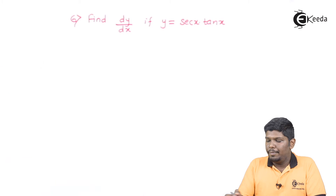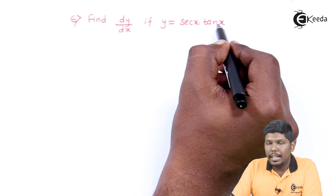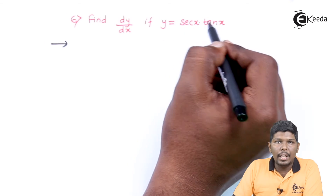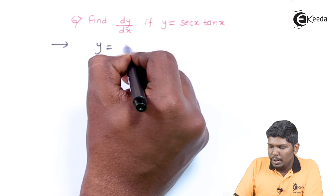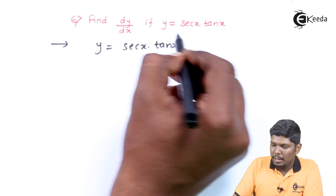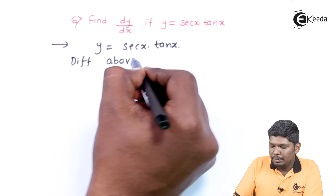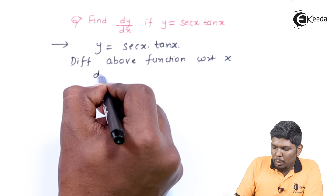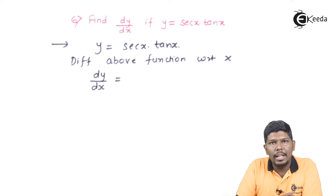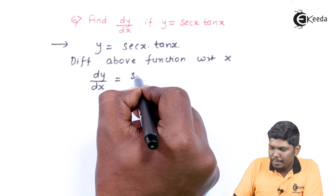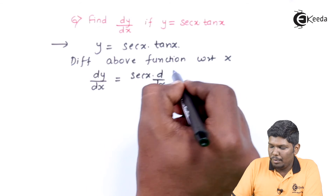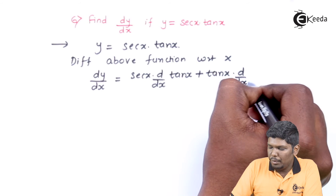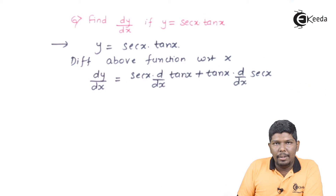In problem number 6, we have two functions getting multiplied, so whenever two functions are multiplied we can directly use the UV rule. y is equal to sec x into tan x. Differentiating the above function with respect to x, dy/dx is obtained. Let us arrange the right-hand side in the form of UV: u as it is, times the derivative of v, plus v as it is — that is tan x — into the derivative of u. The format is ready, let us start differentiating.